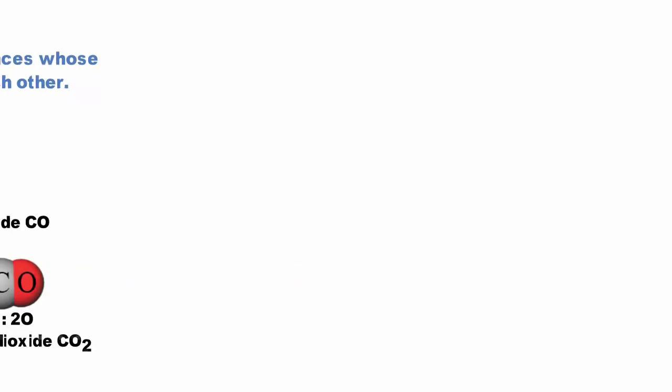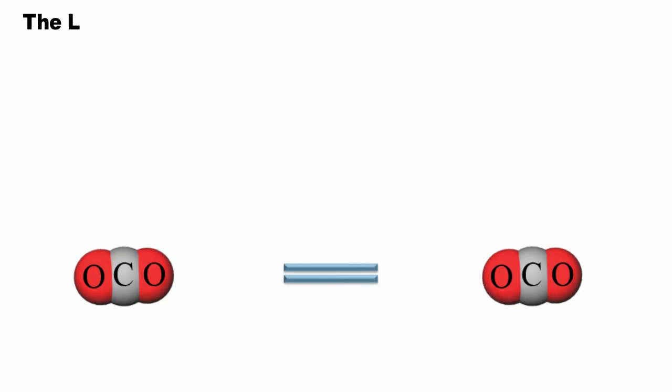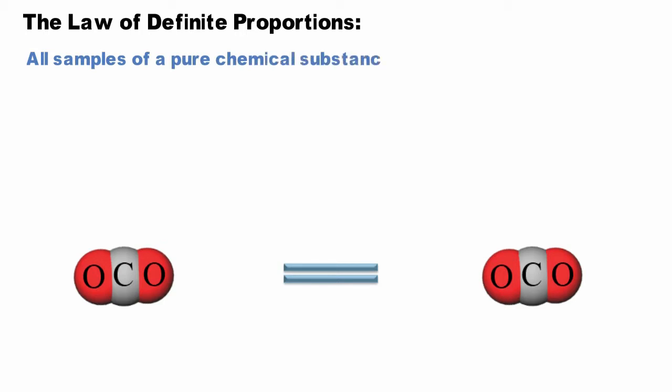The second law put forth by John Dalton is the law of definite proportions. It states that all samples of a pure chemical substance will always contain the same proportion of elements by mass regardless of the sample's origin.